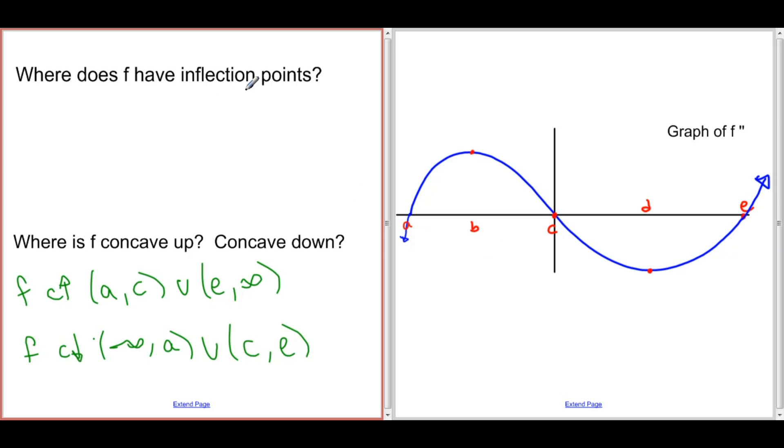Now, where does f have inflection points? Well, f has inflection points when f double prime changes sign. f double prime changes sign here when it crosses through the x-axis, because this is the graph of f double prime. f double prime is negative when this graph is below the x-axis, and f double prime is positive when this graph is above the x-axis. And therefore, this graph changes sign when it crosses through the x-axis.